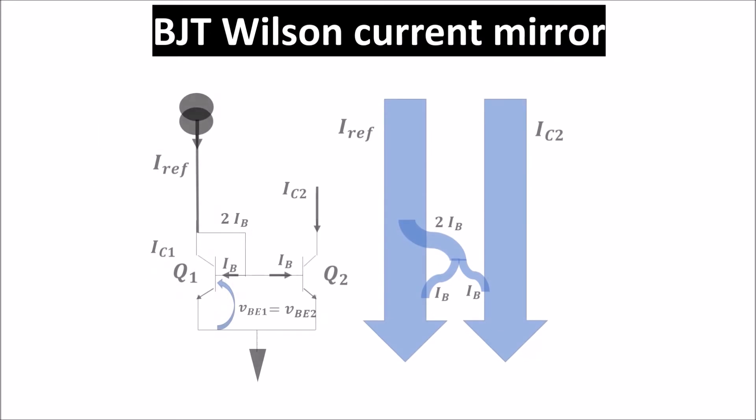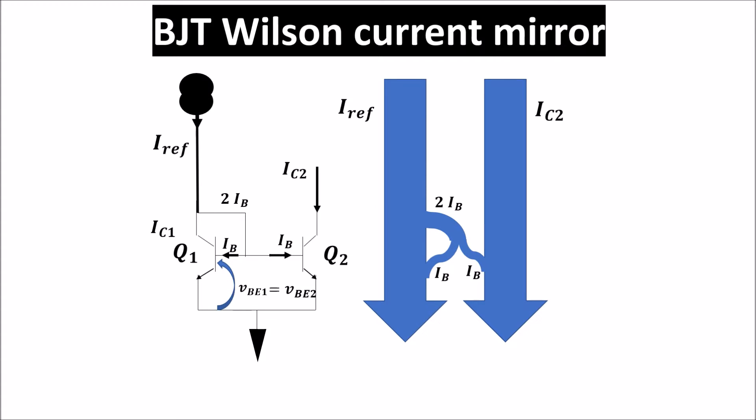We can start from the basic configuration, considering all the transistors matched, and see that from IRF, which flows in the first branch, departs 2IB current, but we give back 1IB to the first branch. This is one cause of mismatch between IRF and the mirrored current.